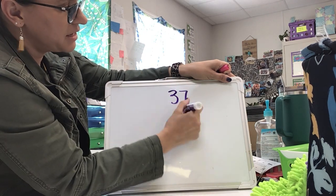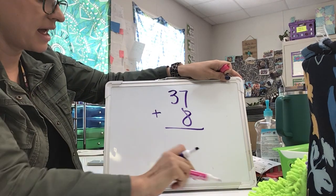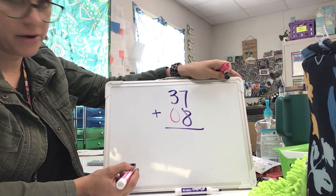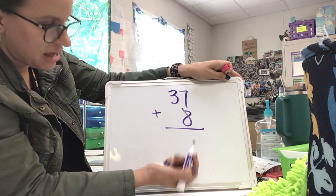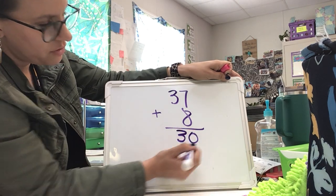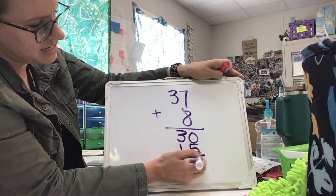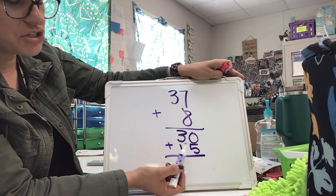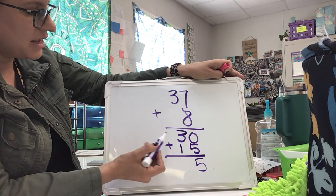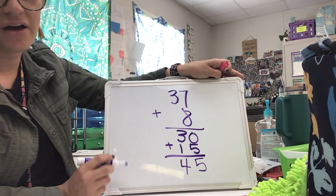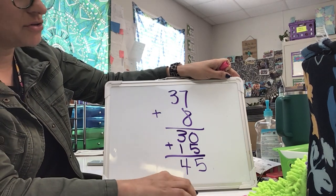So what would you do if there was nothing in the tens place for the second addend? If there was nothing there, you could write in a zero. If that helps you, that's fine. For me, I just look at it and say three plus nothing is three — remember, it's three tens, so that's thirty. Seven plus eight has a sum of fifteen, and then I'm going to add these two partial sums together. Zero plus five has a sum of five, and three tens plus one ten has a sum of four tens. So the sum of thirty-seven plus eight is forty-five using partial sums.